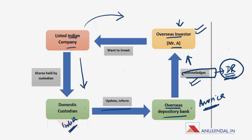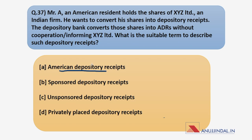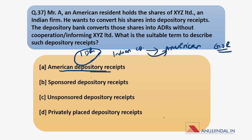Now, after understanding what DRs are, let's look at the options. American Depository Receipts (ADRs) are when an Indian company raises money from American investors. GDRs differ from ADRs in that ADRs relate only to American investors, whereas GDRs are when an Indian company raises money from investors in both America and European countries. Indian Depository Receipts (IDRs) are when a foreign company raises money from Indian investors. These names are based on the domicile of the investors.